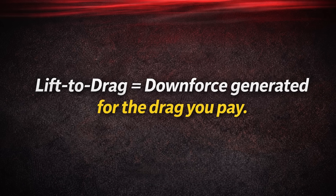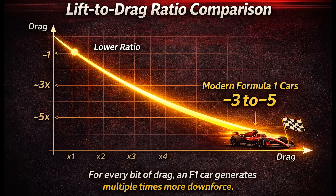That gives us a lift-to-drag ratio of about minus 1.26. Lift-to-drag ratio basically tells you how much downforce you're getting for every unit of drag you're paying — the higher the magnitude, the more aerodynamically efficient the car is. For comparison, a modern Formula One car can achieve lift-to-drag ratios on the order of negative 3 to negative 5, depending on the configuration. That means for every bit of drag, an F1 car is generating multiple times more downforce, which really highlights just how aggressive and efficient their aero packages are.